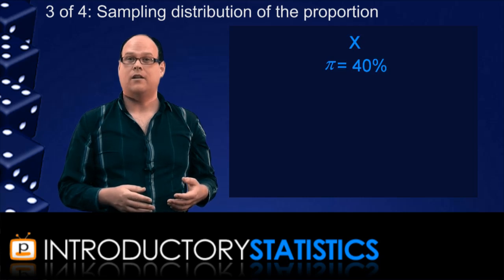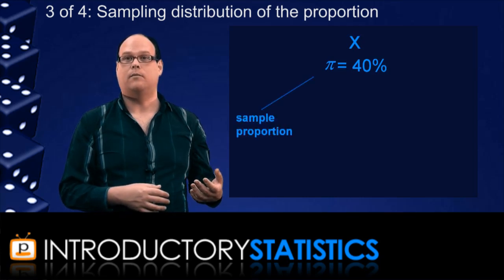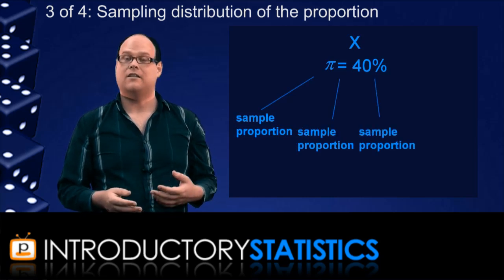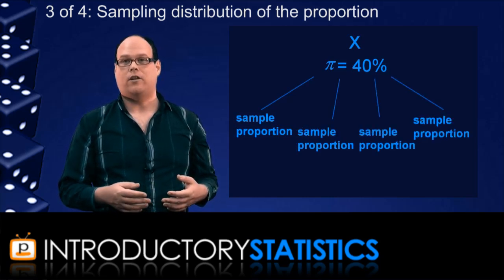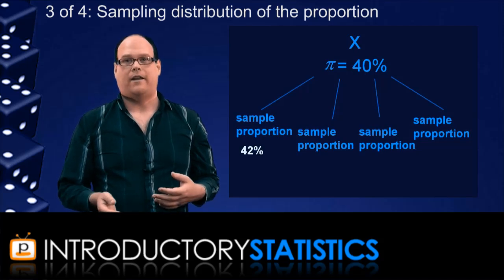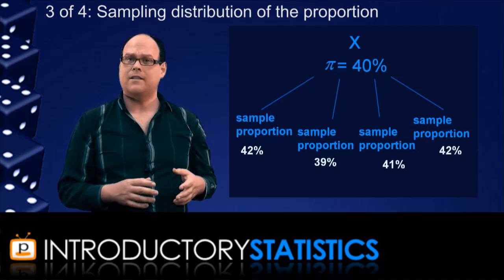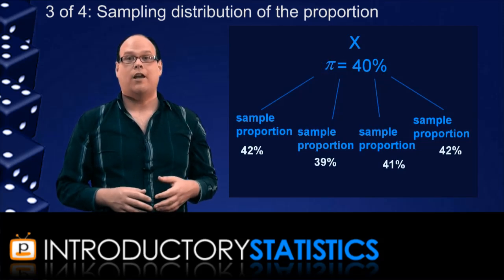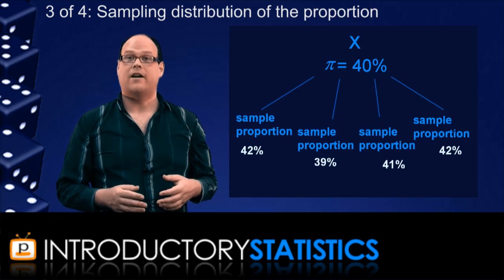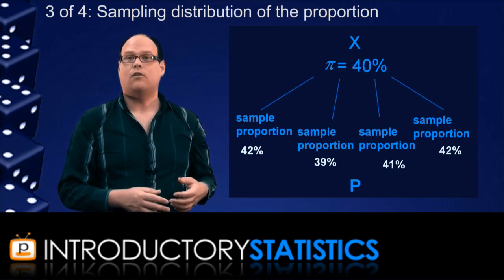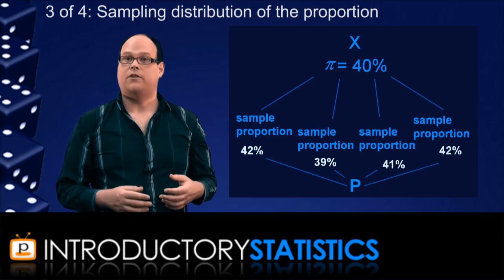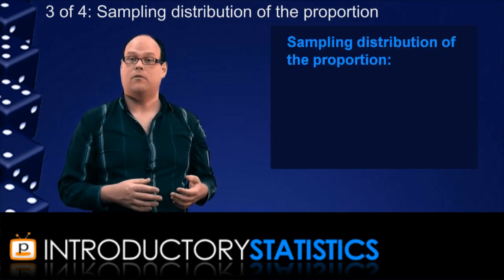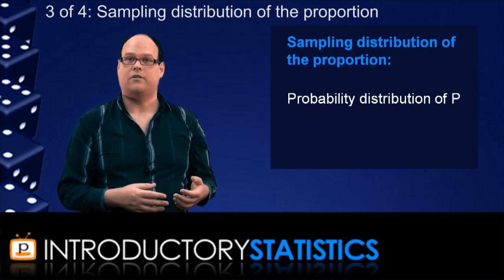Now, like with the sample mean, you can collect samples from the population and calculate a sample proportion. And if different people collect different samples, then they would get slightly different proportions. One person might get 42%, another person might get 39% and so on. But again, these sample proportions probably tend to centre around the population proportion. So like we did with the sample mean, we can define a new variable, which we call p, which represents all the different sample proportions you could get from the different samples that could be collected. The sampling distribution of the proportion is the probability distribution for this variable, p.